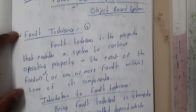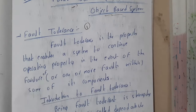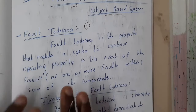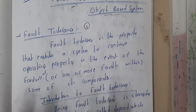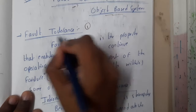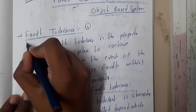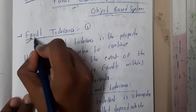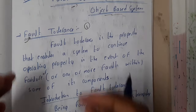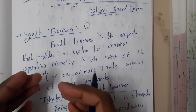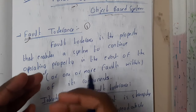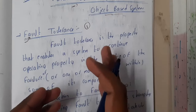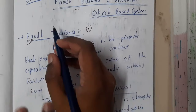What is fault tolerance, and what are the things we will be considering with respect to fault tolerance — these are the things we'll be discussing in this lecture. Before going into tolerance, let us first understand what is a fault. Basically, a fault is something due to which something bad could happen.